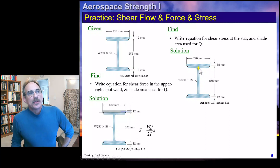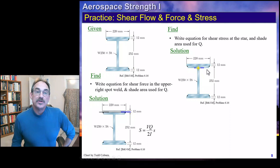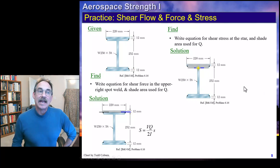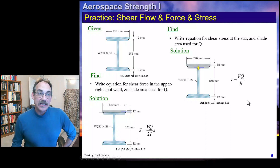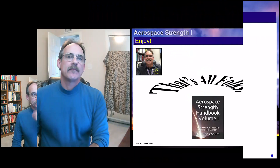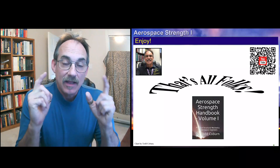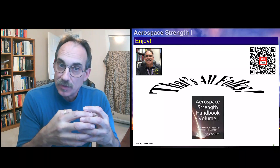To calculate the shear stress at a specific point in the web, we cut the beam right through that location. There are two pieces above that cut, so we calculate Q of each one, add them together, giving us one load path. We then use VQ/I with t equal to the thickness of the vertical web.